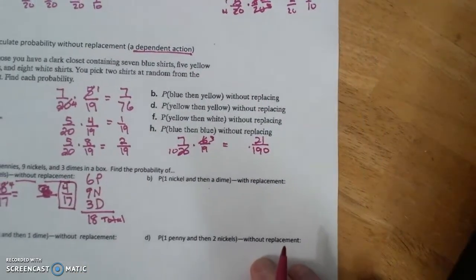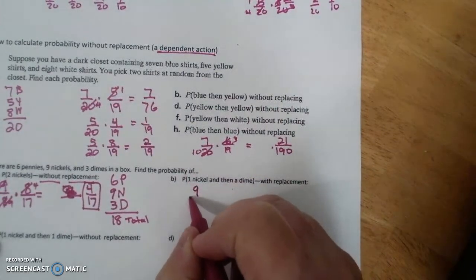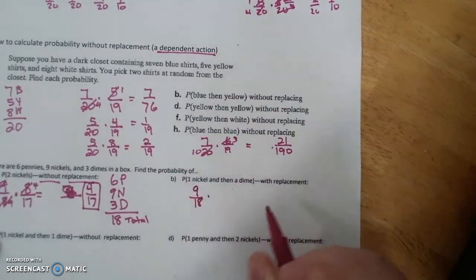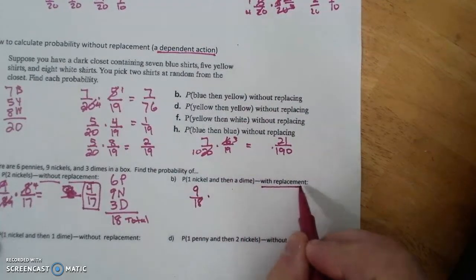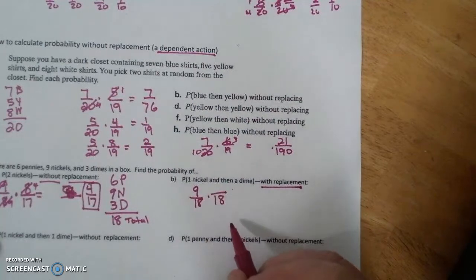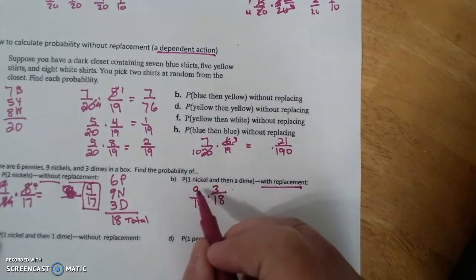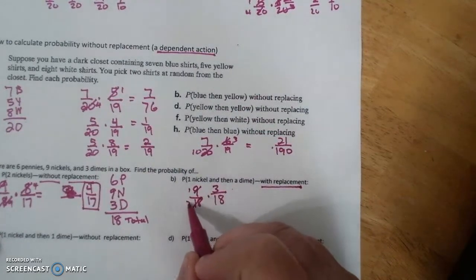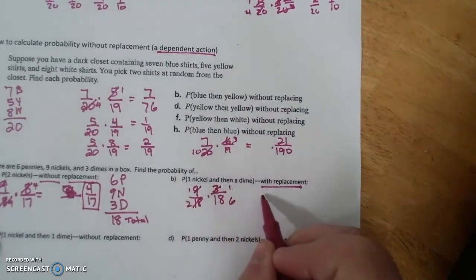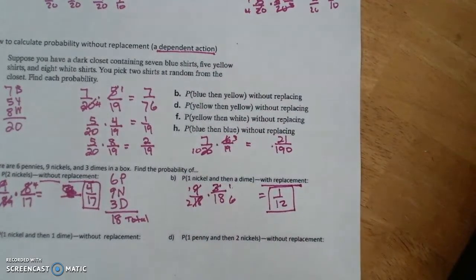1 nickel then 1 dime. So there's 9 out of 18 for a nickel. With replacement, which means 18 are still there, and a dime is 3. That's 1/2, that's 1/6, 1/12. Your answers have to be simplified fractions or they have to be decimals.